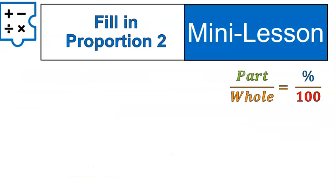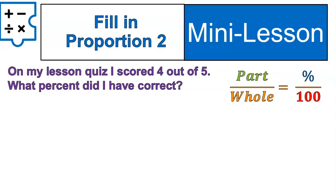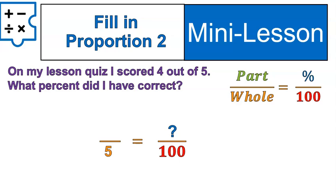Filling in the proportion — number two: on my lesson quiz I scored four out of five. What percent did I have correct? 'What percent' means the percent is your unknown value. The other fraction is four out of five: five is the whole number and four is the part.